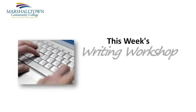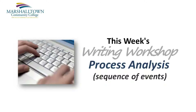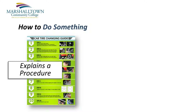In this week's writing workshop, I'm going to have you write what's called a process analysis. Now don't worry, this term sounds more complicated than it really is. As you'll soon find out, a process analysis is simply a paragraph that explains a sequence of events. In one type of process analysis, you might explain to a reader how to do something. For example, this car tire changing guide could be called a process analysis because it explains a procedure or a sequence of events that your reader will follow.